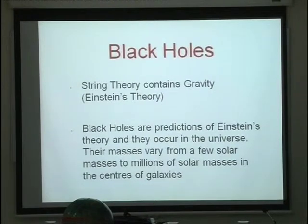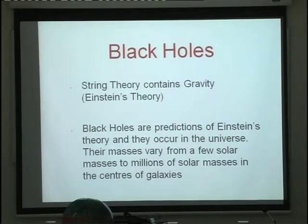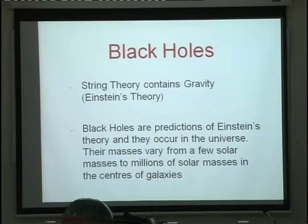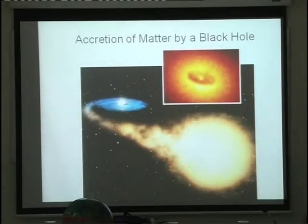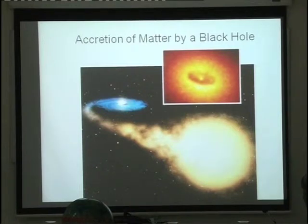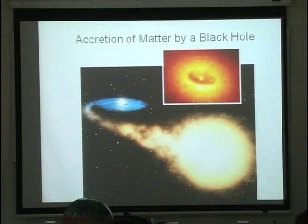Not only does Einstein's theory predict black holes, but they are in the sky. Black holes range from a few solar masses all the way to millions of solar masses — the so-called AGNs fueling the centers of big galaxies. There is absolutely no doubt in the experimental community of astrophysics and cosmology that these objects, which are predictions of Einstein's theory, actually exist in nature.